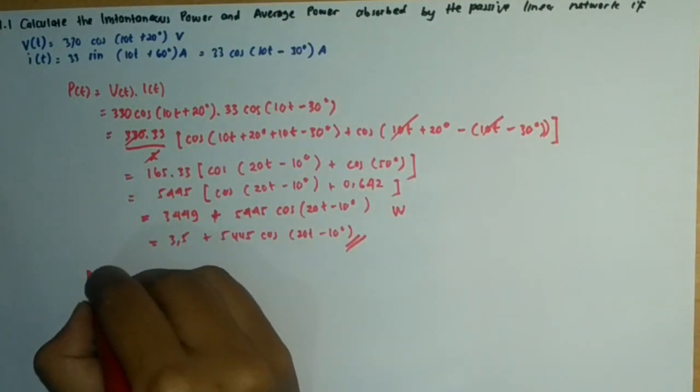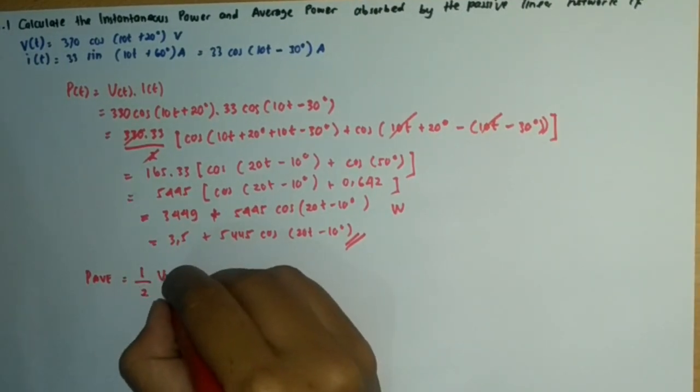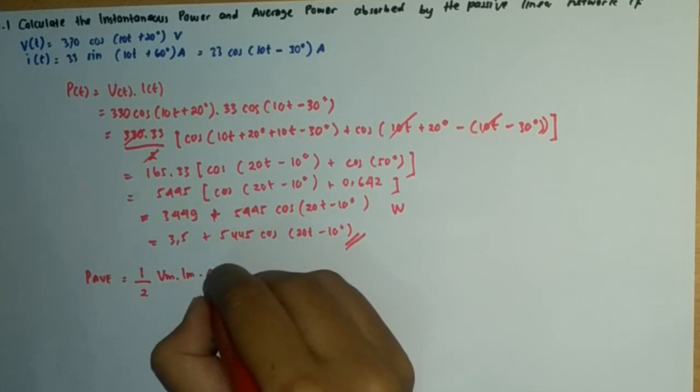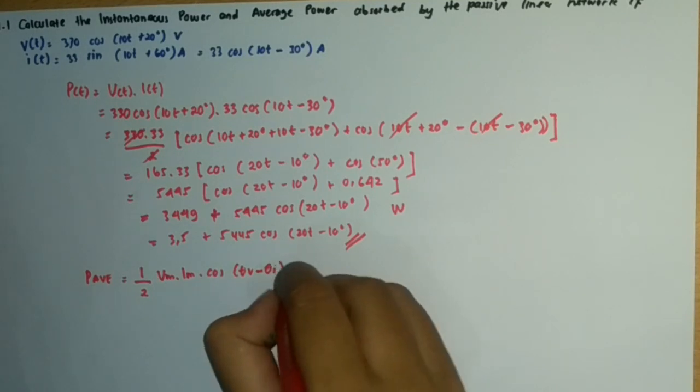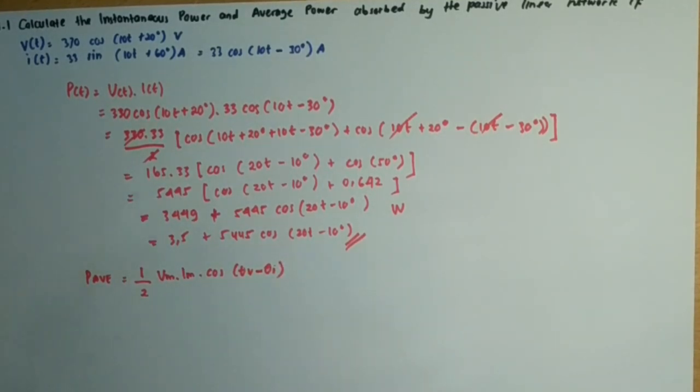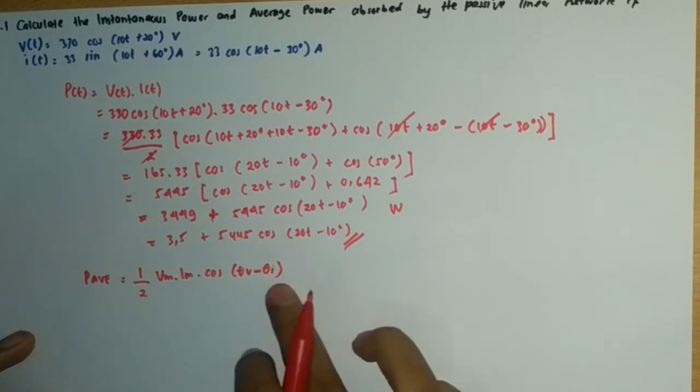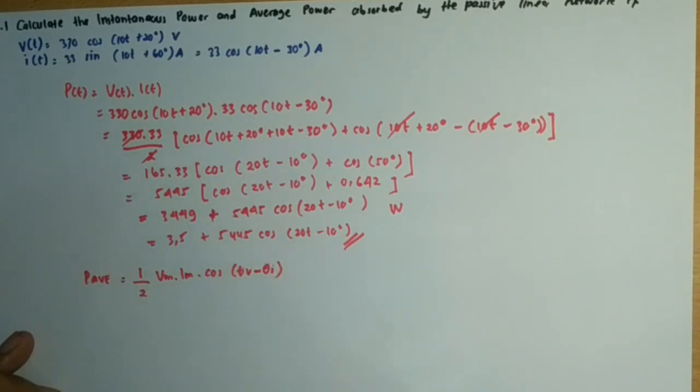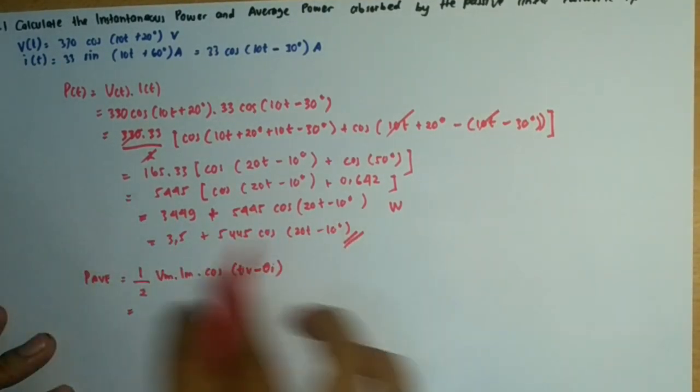Next, the second question is the average power. The equation for average power is P_avg = (1/2) × V_max × I_max × cos(θ_V - θ_I). If you're asking me how to get this equation, maybe in the next video I will explain and put it in the link description.